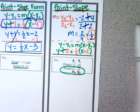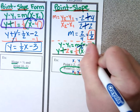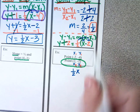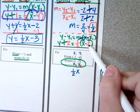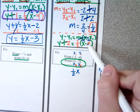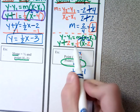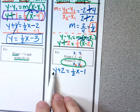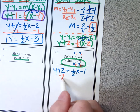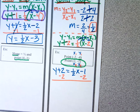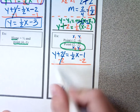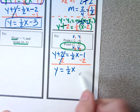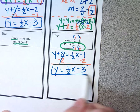To convert to slope-intercept, I distribute: one half times x is one half x; one half times negative two — half of two is one, positive times negative makes negative one. I bring down equals and y plus two. To get y by itself, I subtract two from both sides. This makes zero, y drops, equals drops, one half x drops. Negative one minus two is negative three. And there's my equation in slope-intercept form.